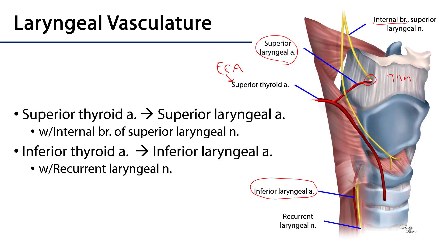The inferior laryngeal artery is a branch of the inferior thyroid artery. That inferior thyroid artery comes from the thyrocervical trunk, which comes from the first part of the subclavian artery. So: first part of subclavian artery to thyrocervical trunk to inferior thyroid artery to inferior laryngeal artery. That inferior laryngeal artery ascends in the tracheoesophageal groove along with the recurrent laryngeal nerve.